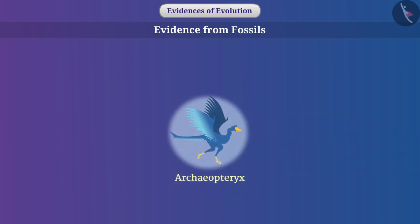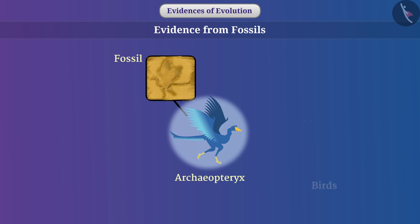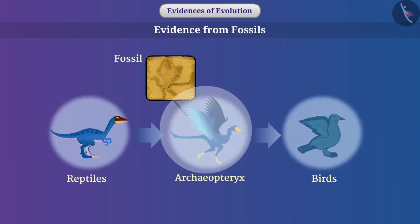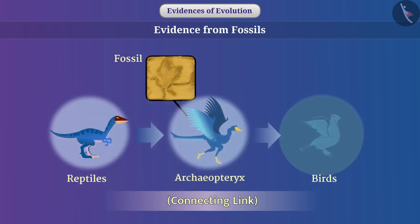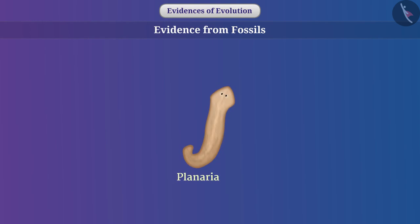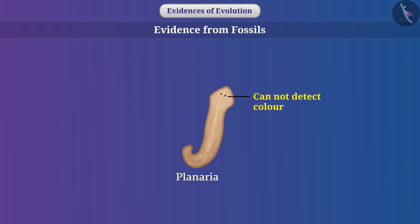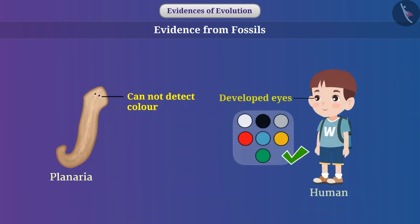Archaeopteryx was an ancient bird whose fossils give us the idea that birds have evolved from reptiles. It is the connecting link between these animals. Evolution is the result of bit-by-bit changes that happen over generations. For example, in planaria, an eye-like structure is present but it is very simple. The eyes of some animals cannot detect color, while the eyes of human beings are much more developed compared to those animals.